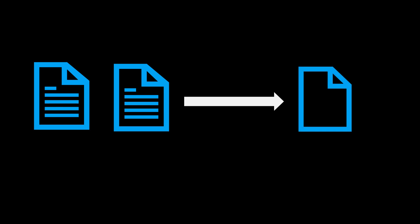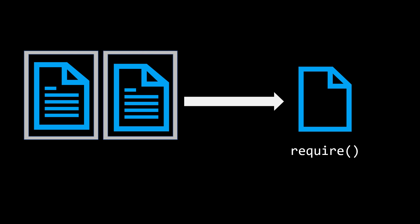Whenever we write any code in Node.js, we generally use that code in other files by exporting the file as a module. To facilitate this, Node.js creates a function wrapper around every code file that we write and also provides us access to some global objects inside that file. One of those objects is the module object, which contains an exports property. But in addition to that, there is also the exports global, and this is where things start to get a little confusing.